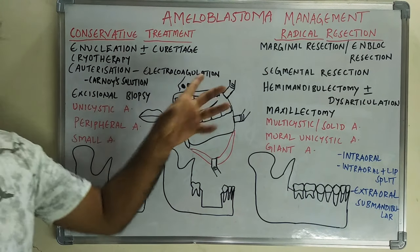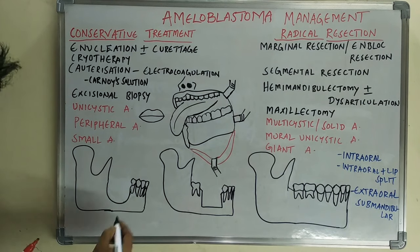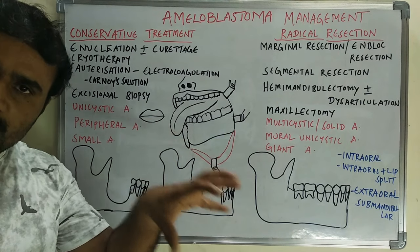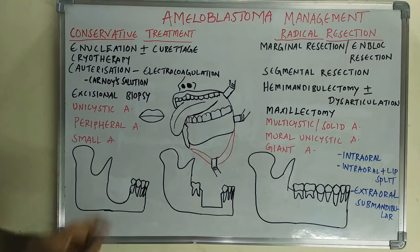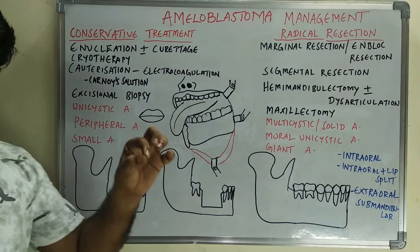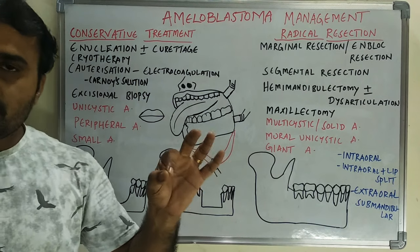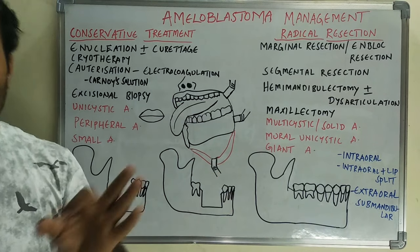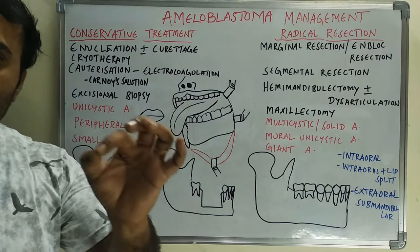For electrocoagulation — that is electrocautery — you take the electrocautery and apply it on the bony walls. The mechanism is the same: it produces necrosis and death of ameloblastic cells. For Carnoy's solution, this is an important question that could be asked as a short answer.